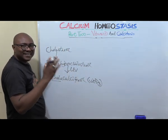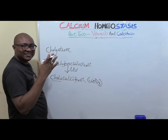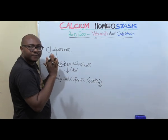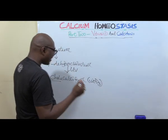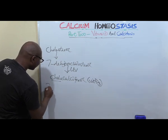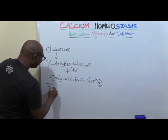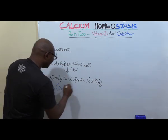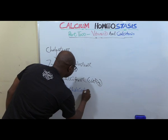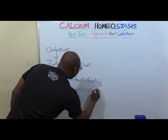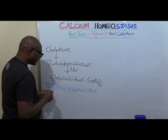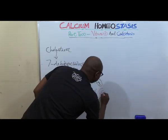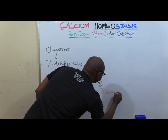In the liver, there is hydroxylation at the 25th position of the structure of vitamin D. This 25th hydroxylation converts it into 25-hydroxycholecalciferol. This intermediate has another name — it's called calcidiol.